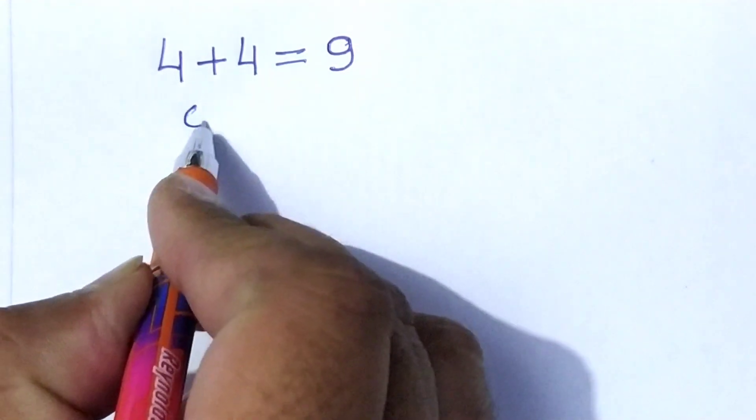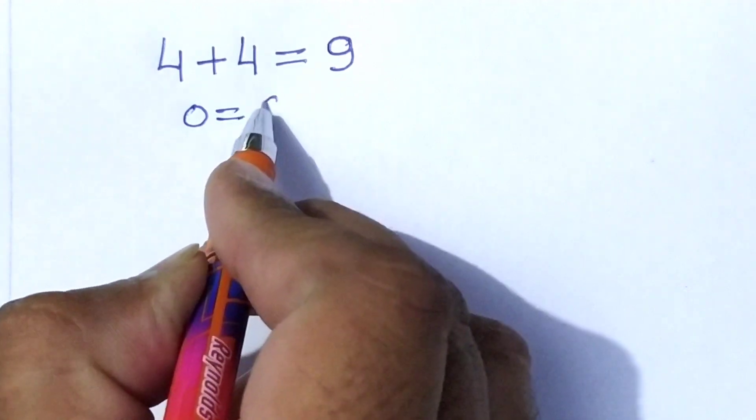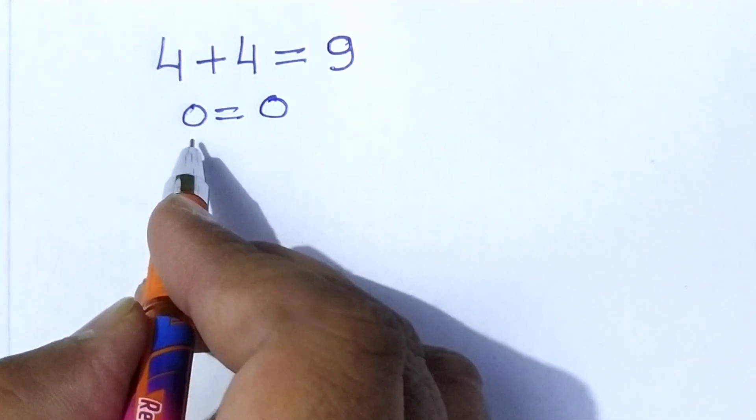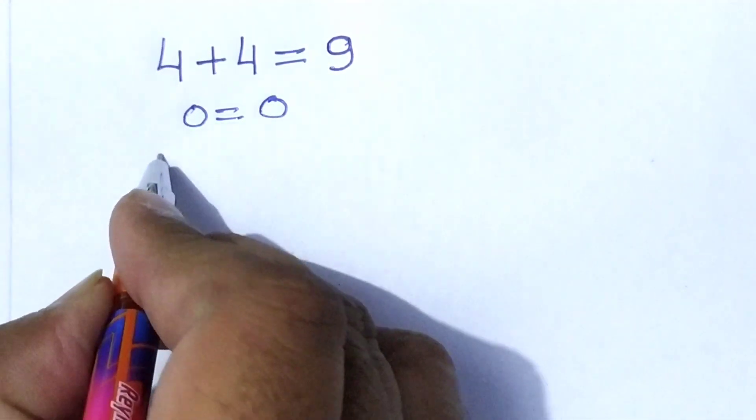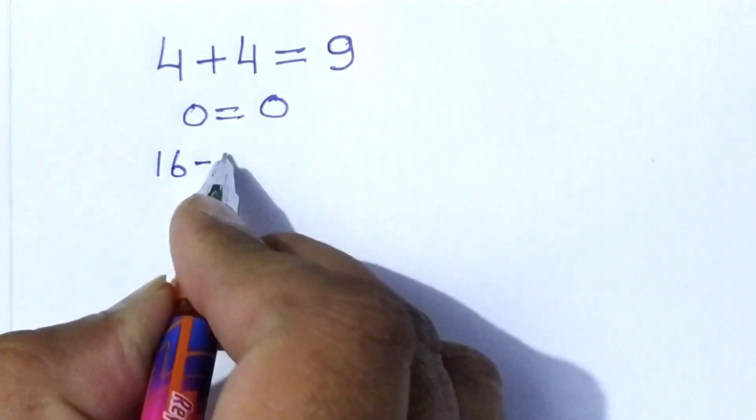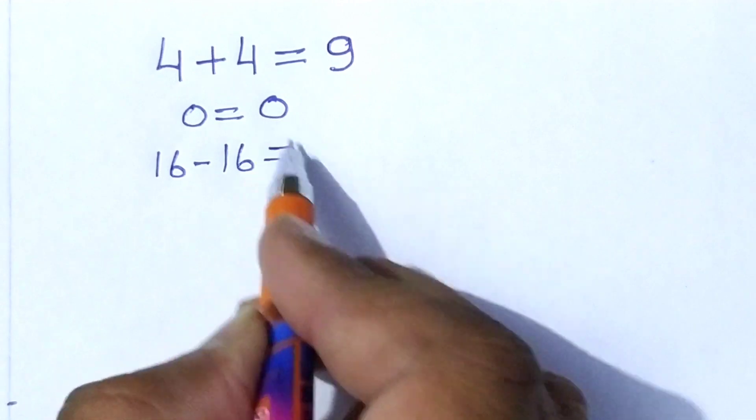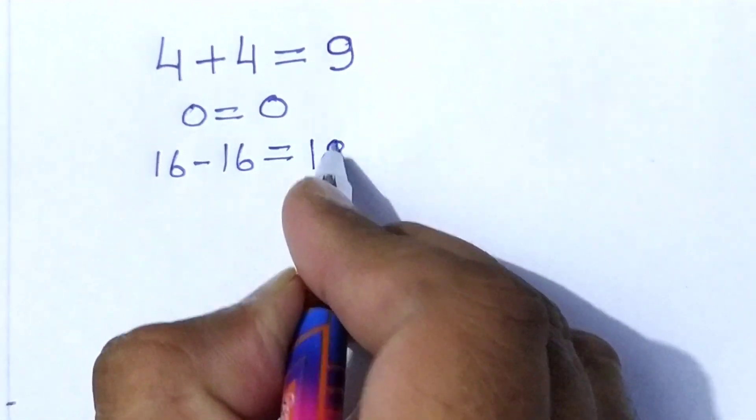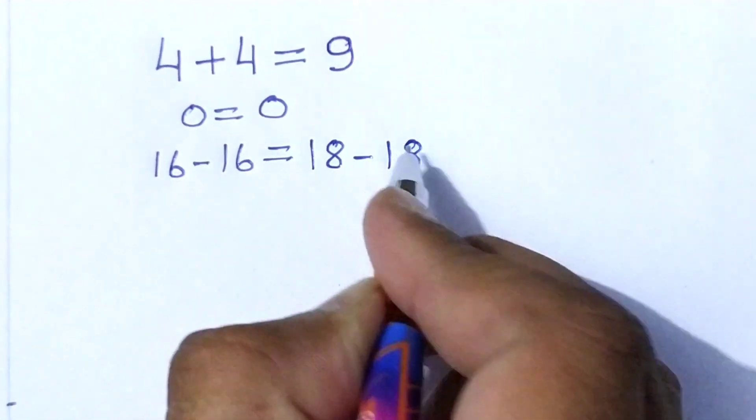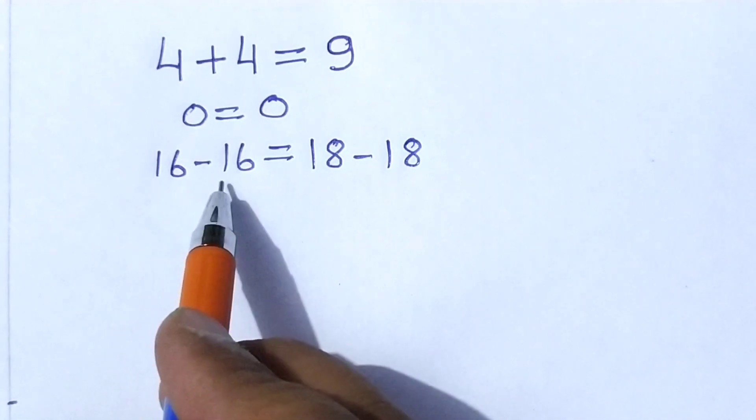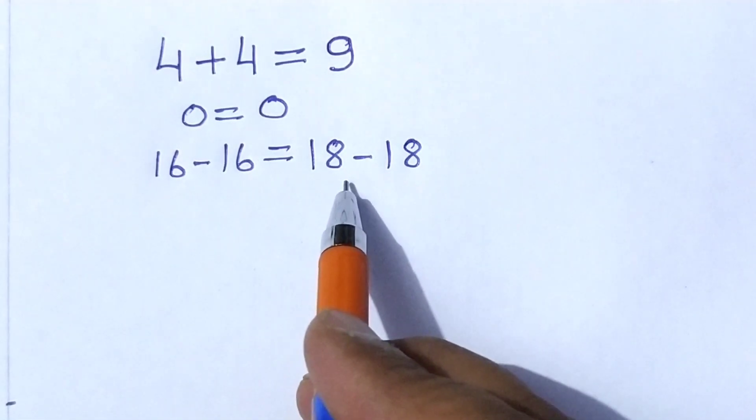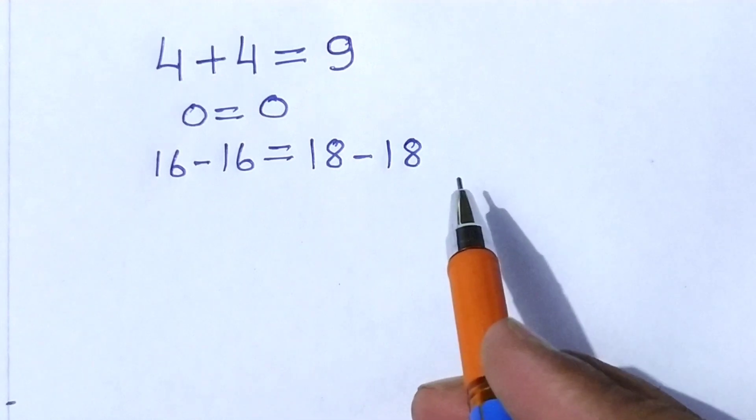We know that 0 is equal to 0. We can write this 0 as 16 minus 16 is equal to this 0 as 18 minus 18. Because 16 minus 16 is equal to 0 and 18 minus 18 is also 0.